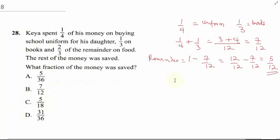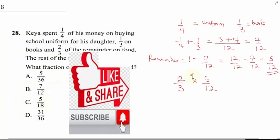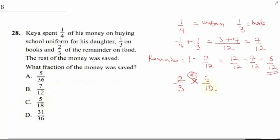He spent 2/3 of the remainder on food, so 2/3 times 5/12, because 'of' in math means multiplication. So 2/3 of 5/12. Now in order to find this, the 2 here is going to be 1, and the 3 here will be 6, so this will give us 5/18.